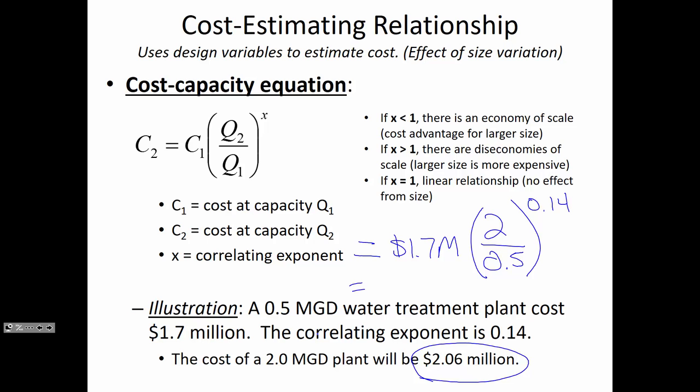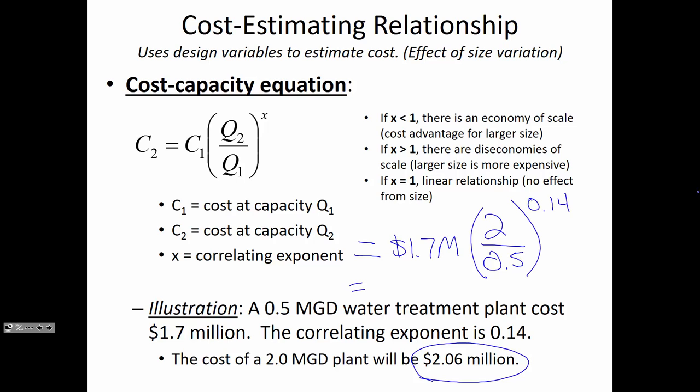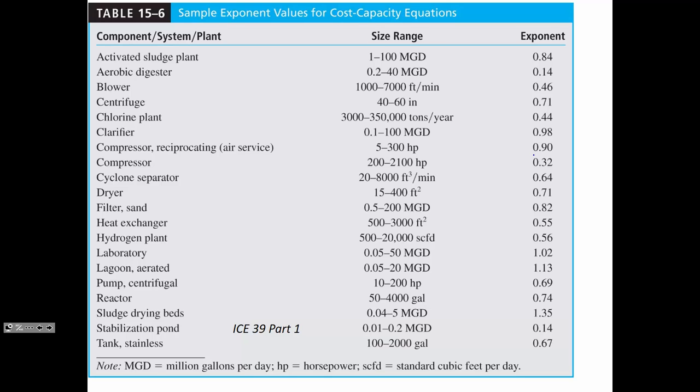So let's talk more about the correlating exponent. Where does that sort of information come from? Tables like this. There are lots of different industries out there. Wastewater treatment is just one illustration that's provided by the text. So most of these have the exponent less than 1, meaning that if you buy a bigger one, you're getting more value per unit purchased. But some of these, there is a diseconomy of scale.